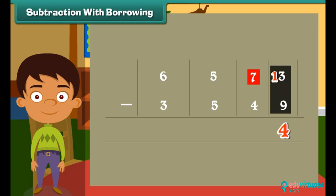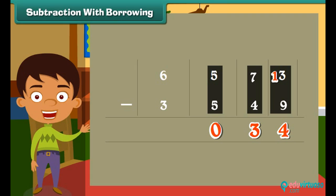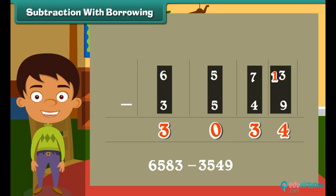Subtract tens. 7 minus 4 is 3. Similarly we now subtract hundreds. 5 minus 5 is 0. Subtract thousands. 6 minus 3 is equal to 3. So 6583 minus 3549 is equal to 3034.